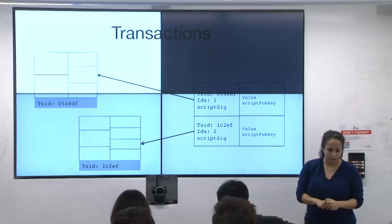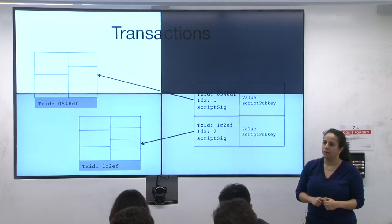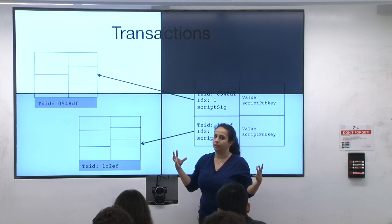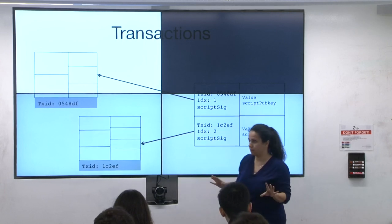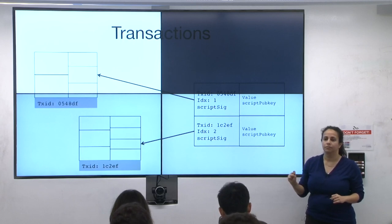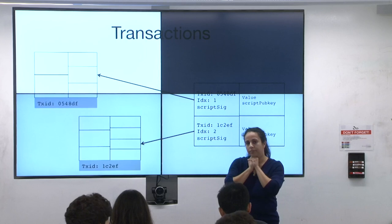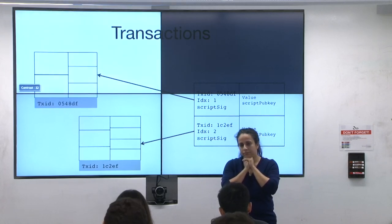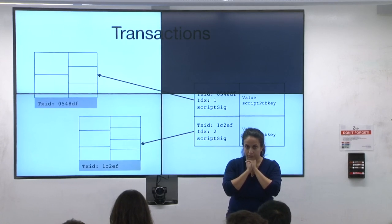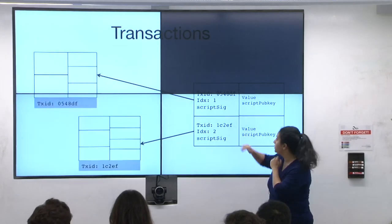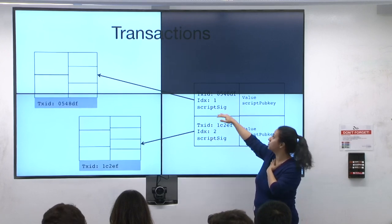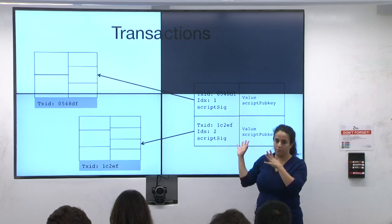Every node maintains data structures to check these things efficiently, including a data structure called the UTXO set. Regarding transaction fees: the people creating the transaction determine the fees. The sum of inputs must be greater than or equal to the sum of outputs — you can't create money out of nowhere. The difference between the sum of inputs and the sum of outputs is an implicit fee that goes to the miner who produces the block.